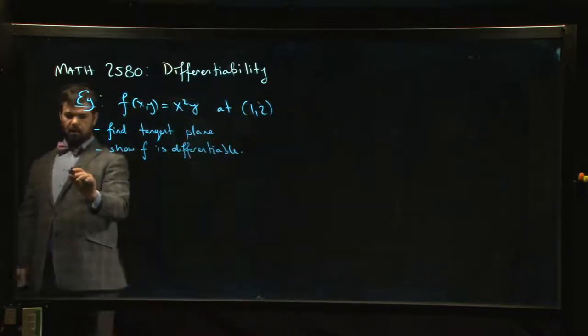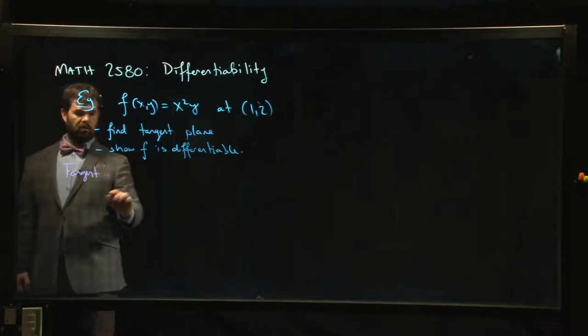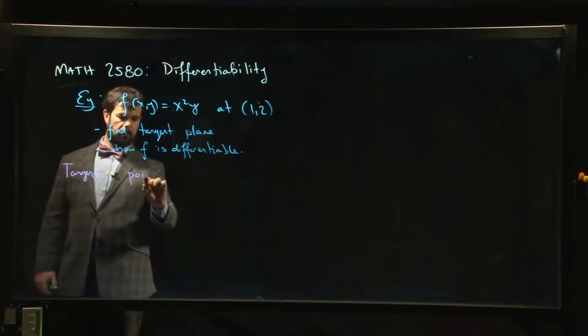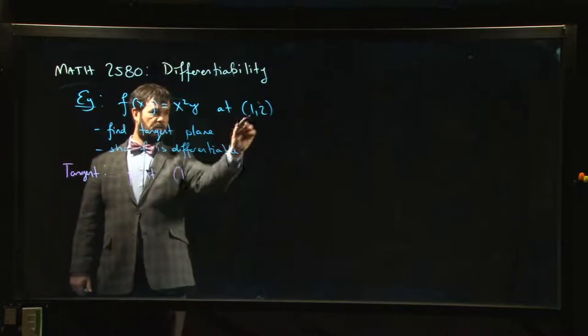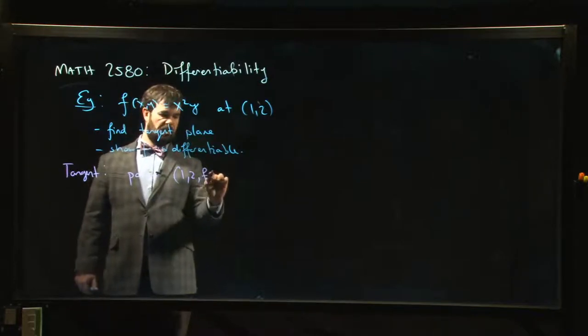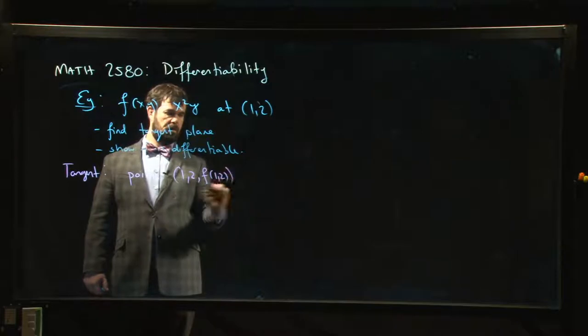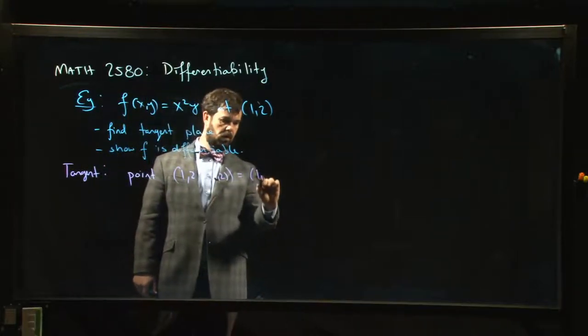So let's do the tangent. For the tangent plane, first we need a point on the plane. Our point is going to be, well, x is 1, y is 2, z is f(1,2), so 1 squared times 2, so our point is (1, 2, 2).